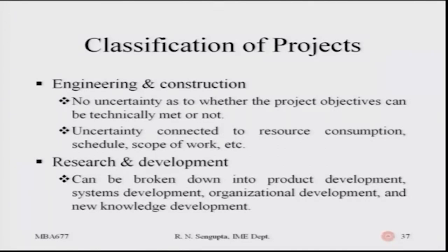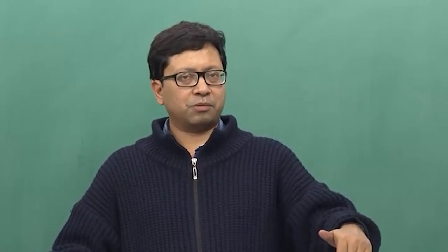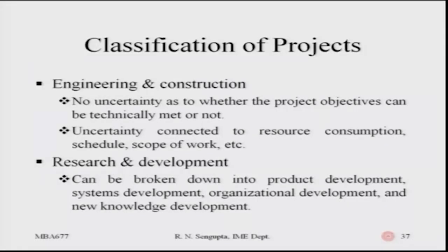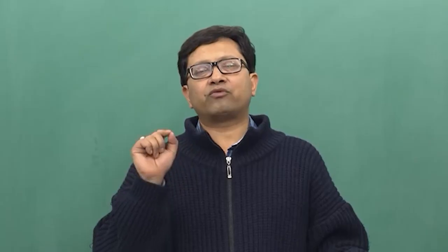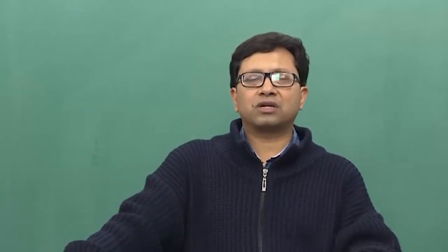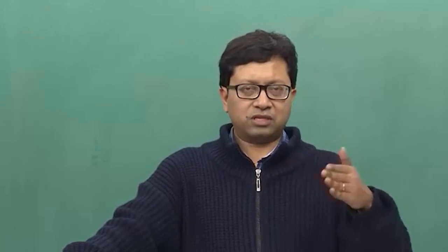Classification from engineering and construction: there should be no uncertainty as to whether the project objectives can be technically met. There should not be any ambiguity. If engineering focus is the main point, technical specifications should be mentioned clearly - no dichotomy in uncertainty connected to resource consumption, schedule, scope, who does what, the plan, engineering specifications, and materials used. Everything should be very specific, because any change would make project implementation difficult. For example, if cement specifications for a bridge are not up to standard, it will affect the long-term life of the bridge.